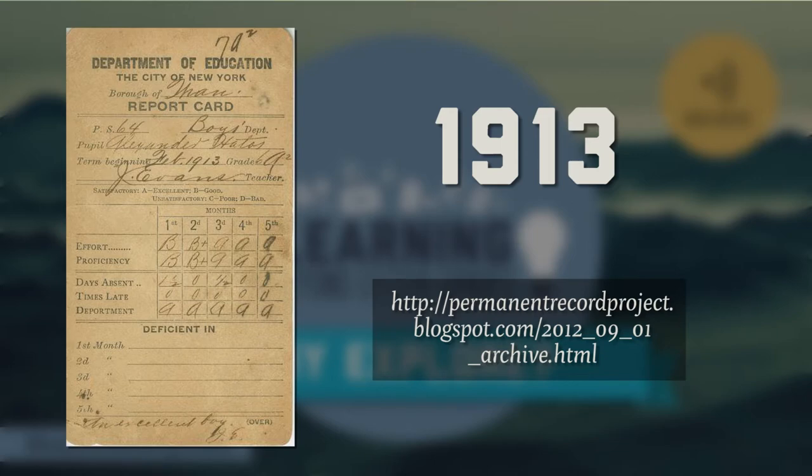Then we have a 1913 report card, and notice that this one has things we might see in many report cards today. We might see effort and proficiency — they did divide the grade into proficiency, which we'd assume relates to competency with the content and concepts in the class, and then a separate grade dedicated to effort.